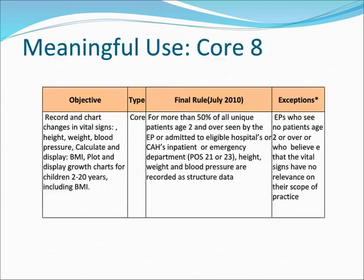Meaningful Use Core 8, Final Rule: For more than 50% of all unique patients seen by the EP who are admitted to eligible hospitals or CAHs in patient or emergency department (POS 21 or 23), height, weight, and blood pressure must be recorded as structured data. Exception: EPs who see no patients age 2 or over, or who believe that vital signs have no relevance to their scope of practice.